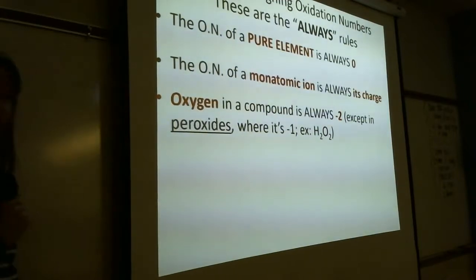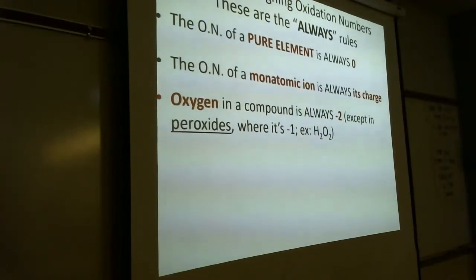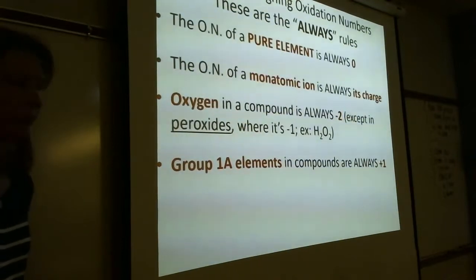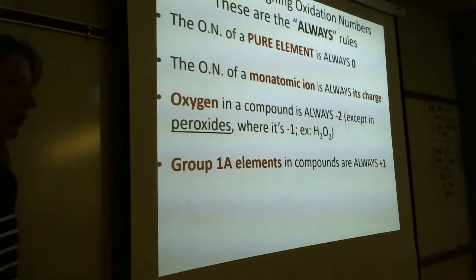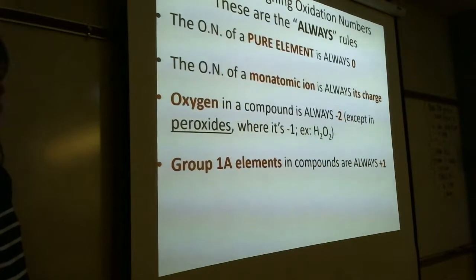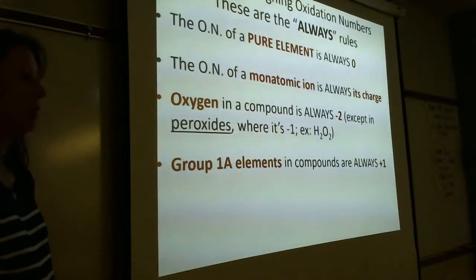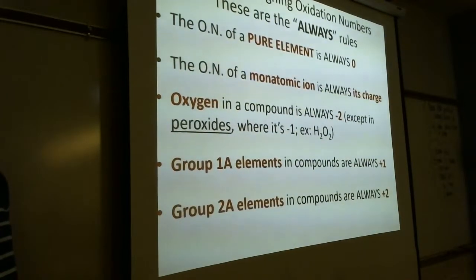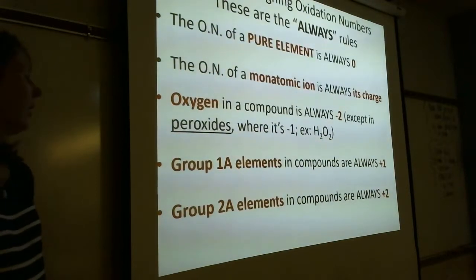You won't deal with peroxides much in intro chem, but if you go on to general chem you'll see this again. Group one elements — hydrogen, lithium, sodium, potassium, rubidium, cesium — are always +1 in compounds. Sodium metal is zero as a pure element, but sodium in sodium chloride is +1. Group two elements in compounds are always +2 — for example, magnesium in magnesium acetate is +2.